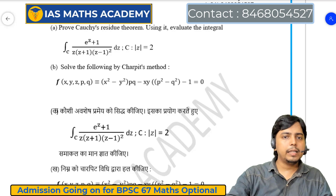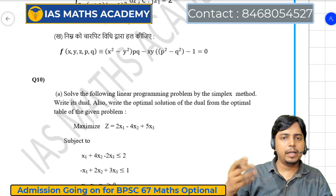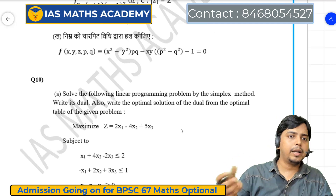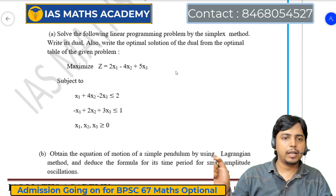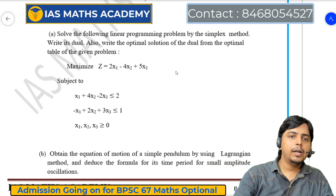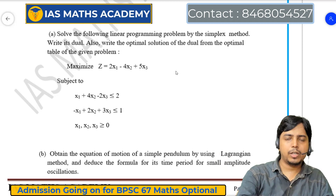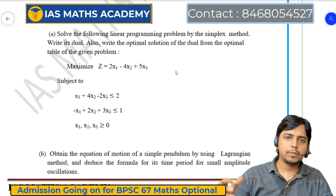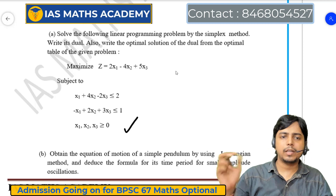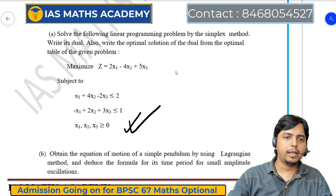Question number 10A में: simplex method का question है — dual निकालना है और dual की optimality check करनी है। यह भी आसान question है, बिल्कुल set pattern का question है। कोई नई चीज़ नहीं करनी है, जो class में पढ़ा है उसी को यहाँ apply करना है।